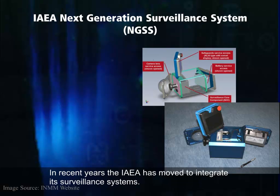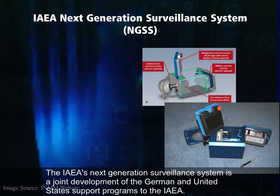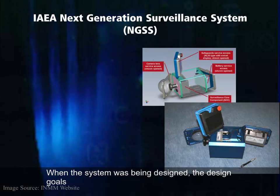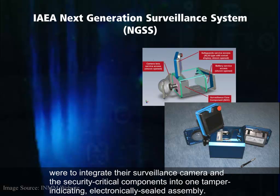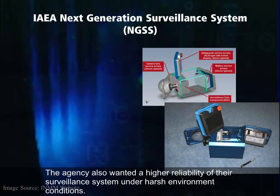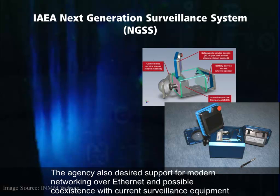In recent years, the IAEA has moved to integrate its surveillance systems. The IAEA's Next Generation Surveillance System is a joint development of the German and United States support programs to the IAEA. When the system was being designed, the design goals were to integrate the surveillance camera and the security-critical components into one tamper-indicating electronically sealed assembly. The agency also wanted higher reliability of their surveillance system under harsh environmental conditions, as well as support for modern networking over Ethernet and possible coexistence with current surveillance equipment.